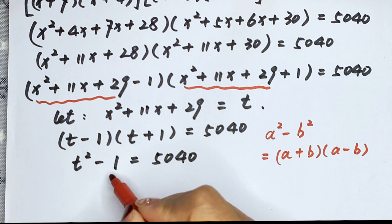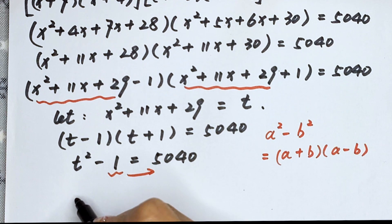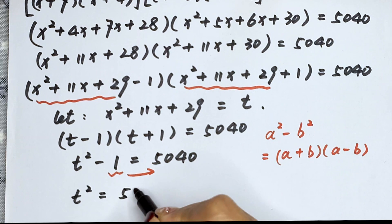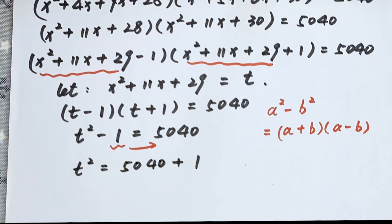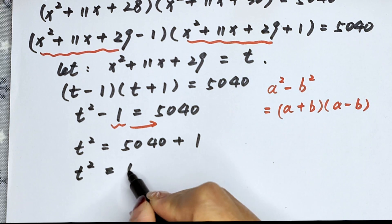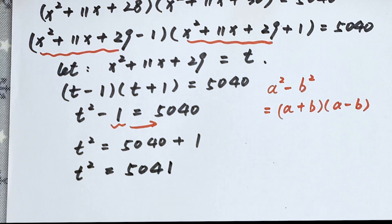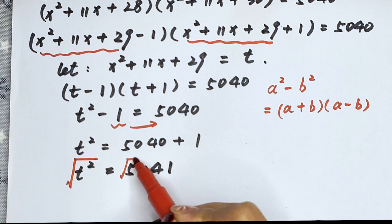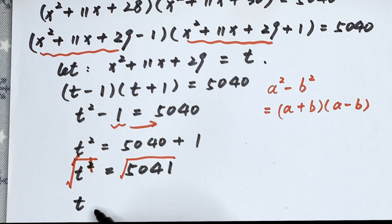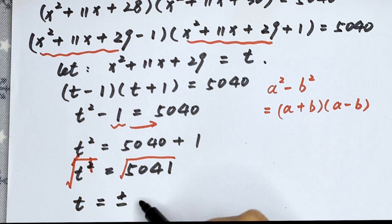We take 1 to the right side, so t squared equals 5,040 plus 1, which gives t squared equals 5,041. Applying the square root on both sides, the square cancels, so t equals plus or minus 71.